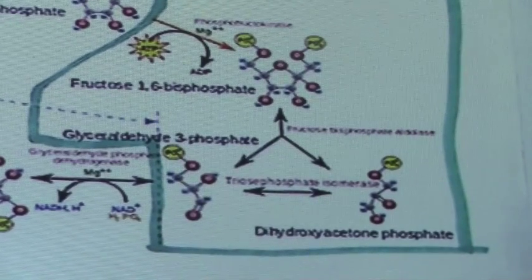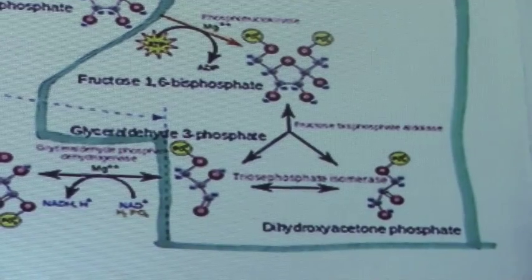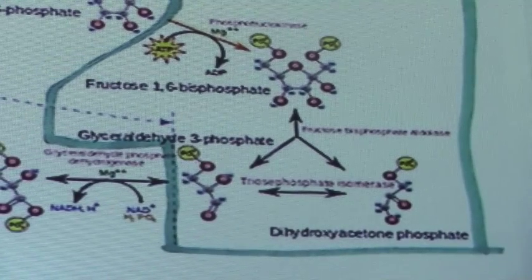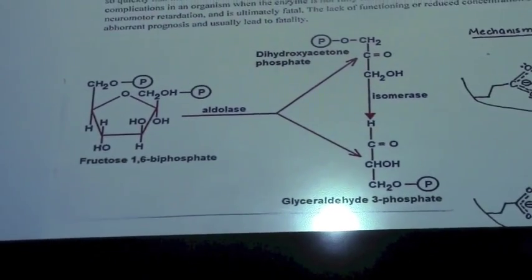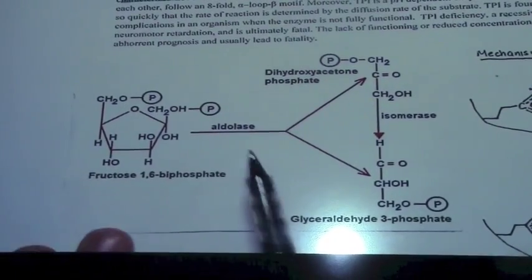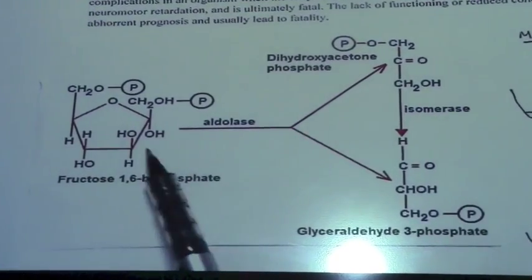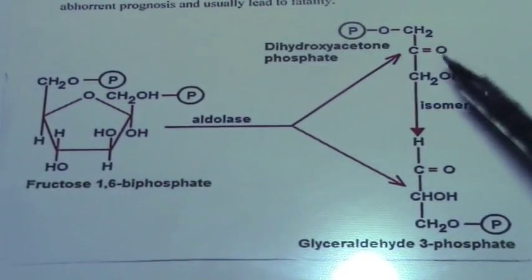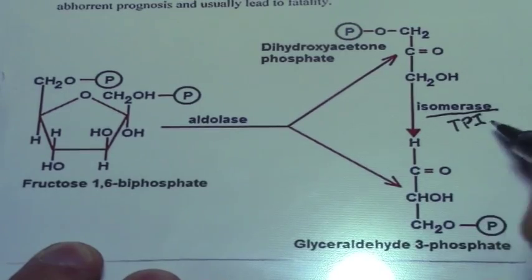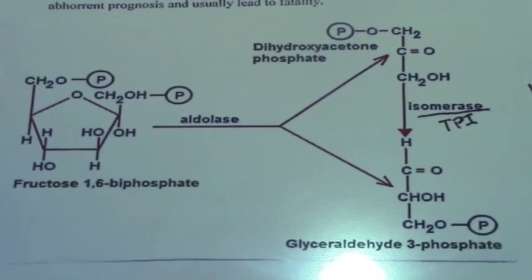Glyceraldehyde-3-phosphate is directly turned into pyruvate with production of ATP. However, if we have only dihydroxyacetone phosphate, we will not have a net ATP gain. So that must be converted into glyceraldehyde-3-phosphate, and that is done using triose phosphate isomerase. The conversion is done here by aldolase, giving us fructose 1,6-bisphosphate to dihydroxyacetone phosphate and glyceraldehyde-3-phosphate. This isomerase right here is our TPI, which is needed to convert it back into G3P.